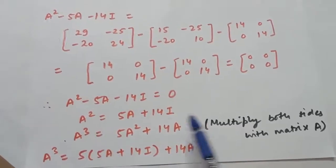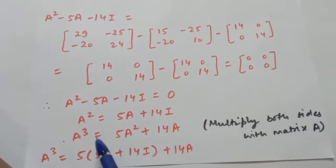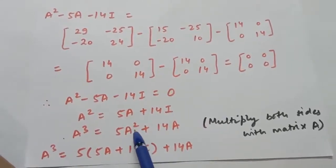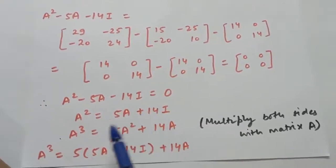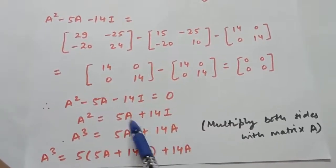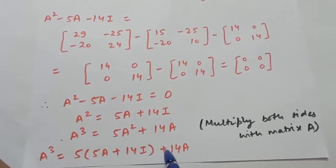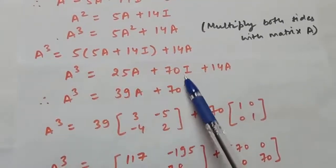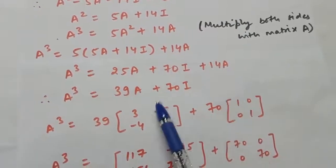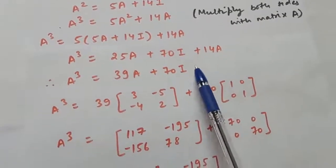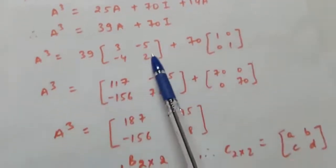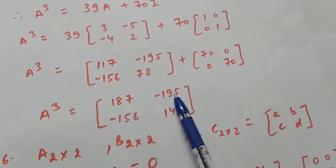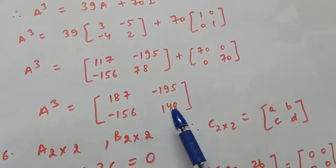To find A³, multiply both sides of A² = 5A + 14I by matrix A. So A³ = 5A² + 14A. Substituting A² = 5A + 14I, A³ = 5(5A + 14I) + 14A = 25A + 70I + 14A = 39A + 70I. With I as the identity matrix, computing 39 times A plus 70 times I gives A³ = [187, -195; -156, 148].